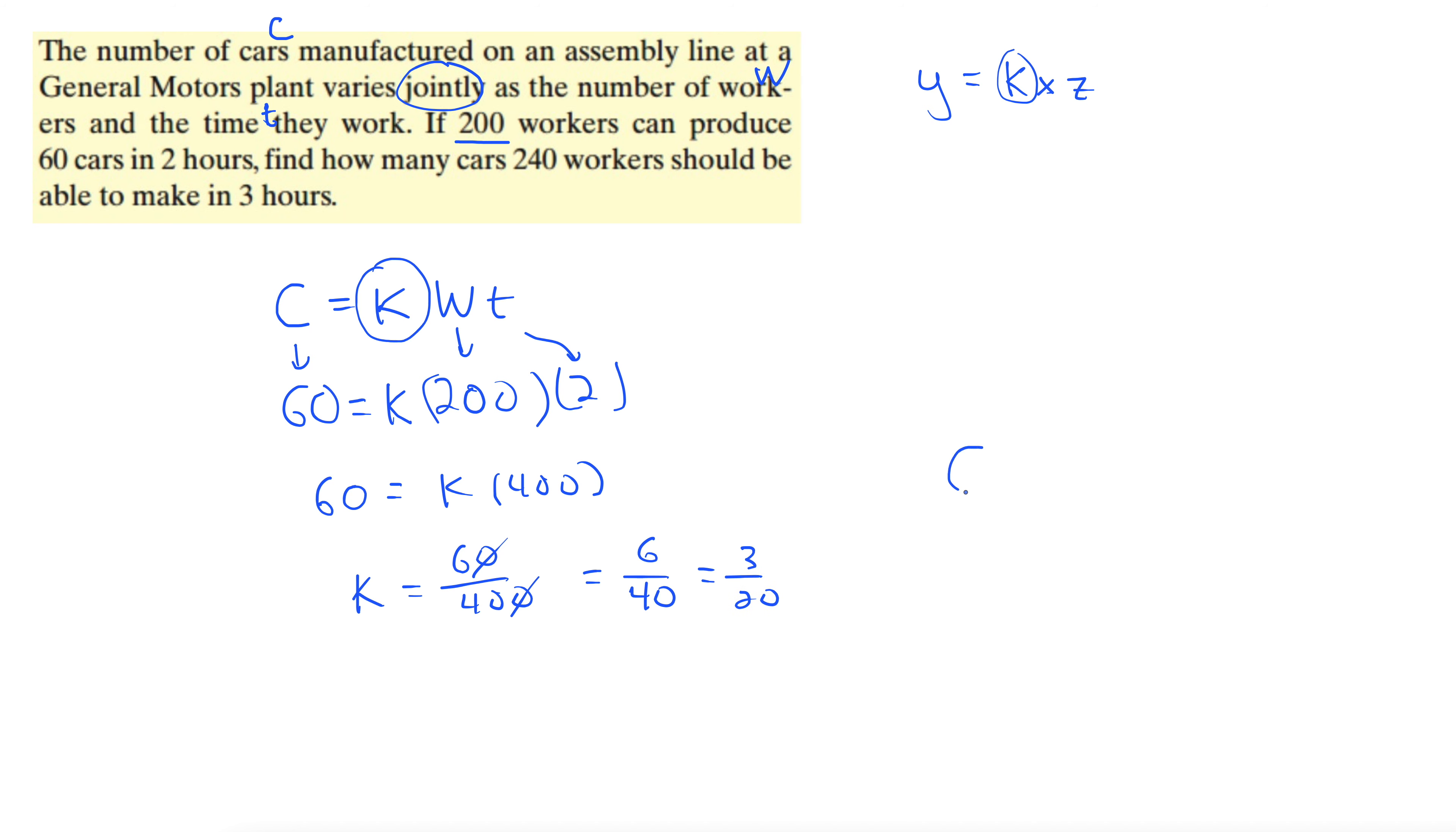So here's our new equation. The number of cars equals 3/20ths times the number of workers and the time. And now, just like in all these variation problems, we'll use this equation that we've constructed to predict some new value.